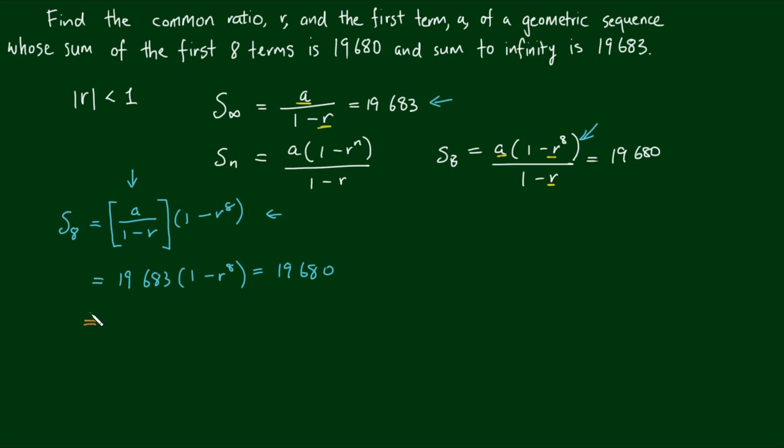So from this, let's move this number downstairs, and we have one minus r to the power of 8 will be equal to 19,680 divided by 19,683.